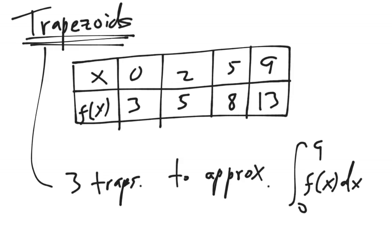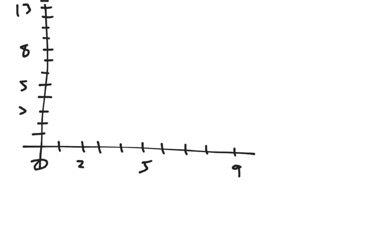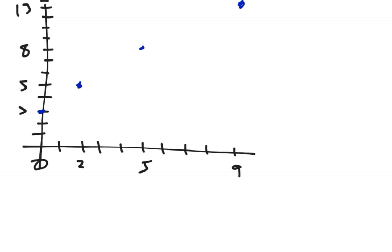What we're going to do is draw a picture. Here are my axes from 0 to 9. I'll plot the points: (0, 3), (2, 5), (5, 8), and (9, 13). An important thing about charts is that you don't know and cannot assume what the function is doing between two points. However, for trapezoids you play connect the dots — straight line, straight line, straight line — and then drop down verticals at each of the x-values.